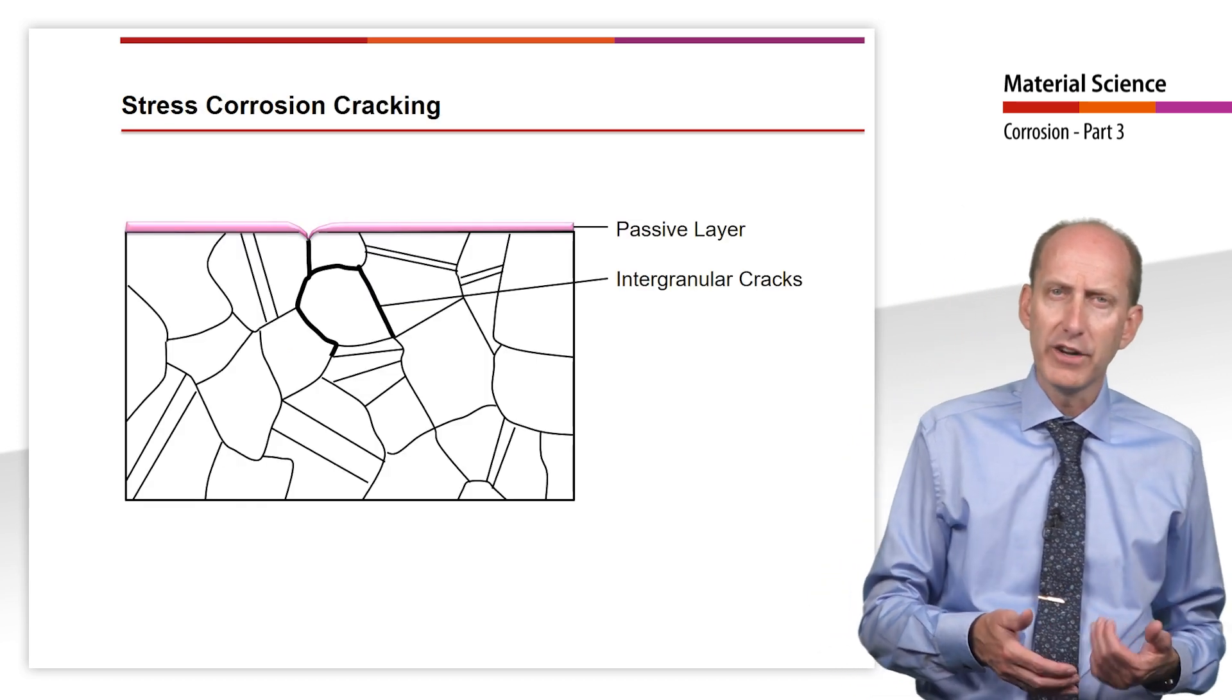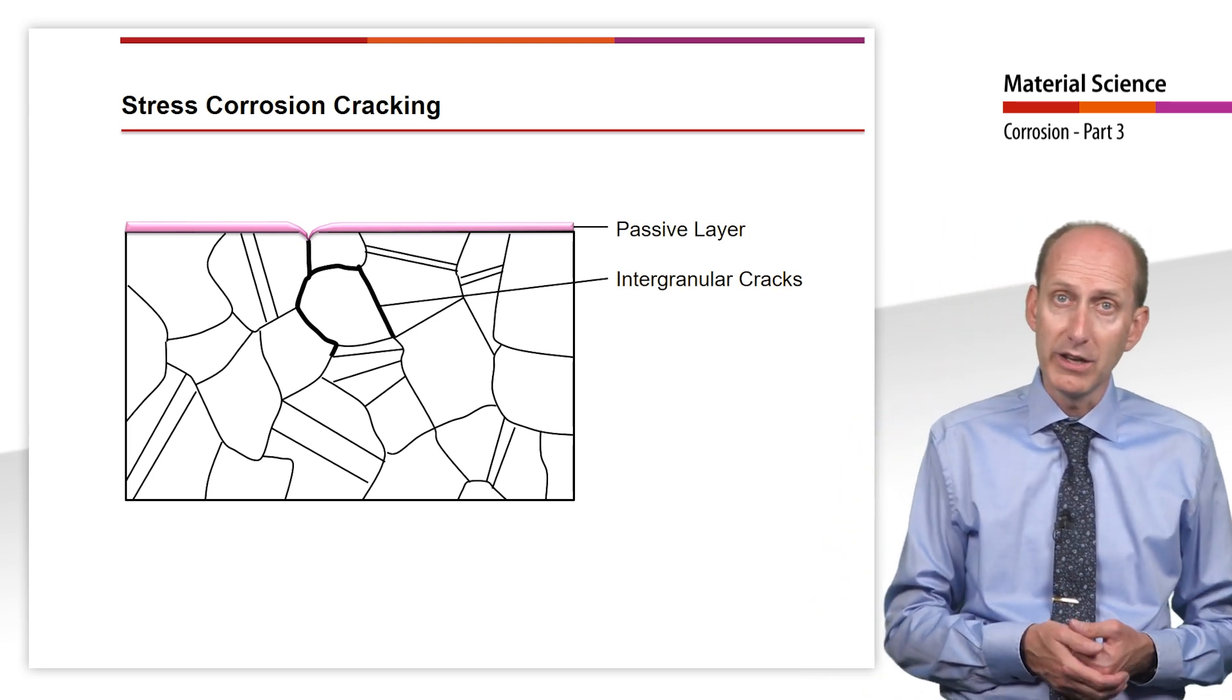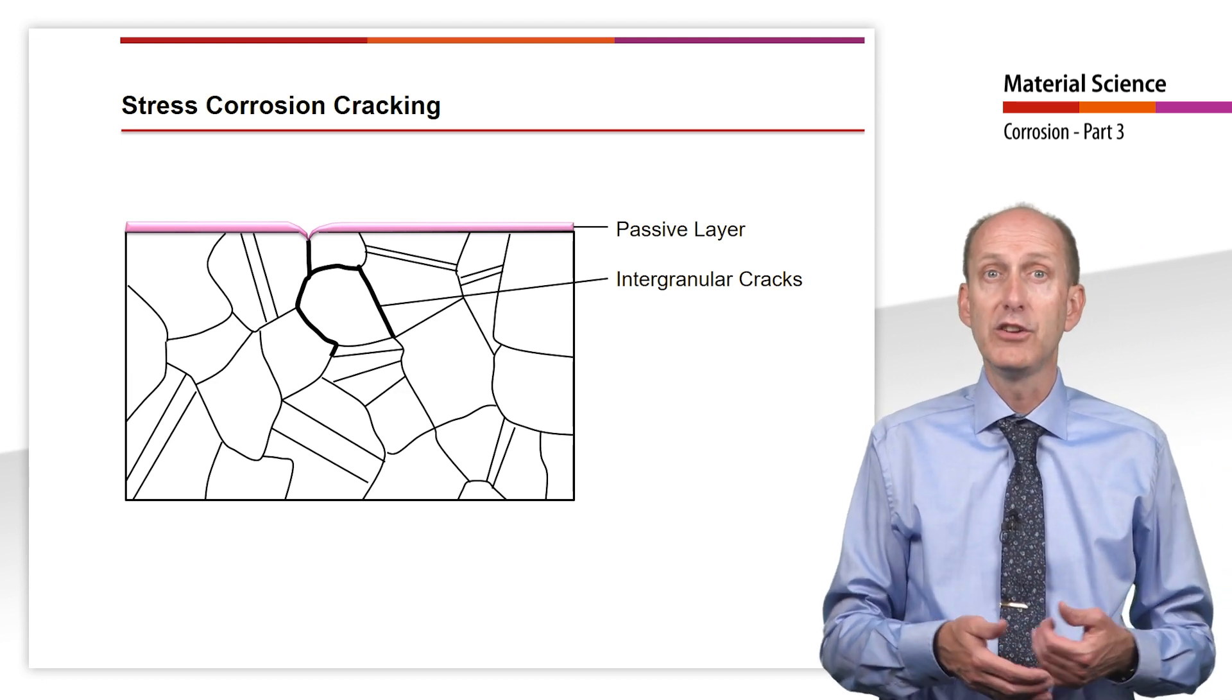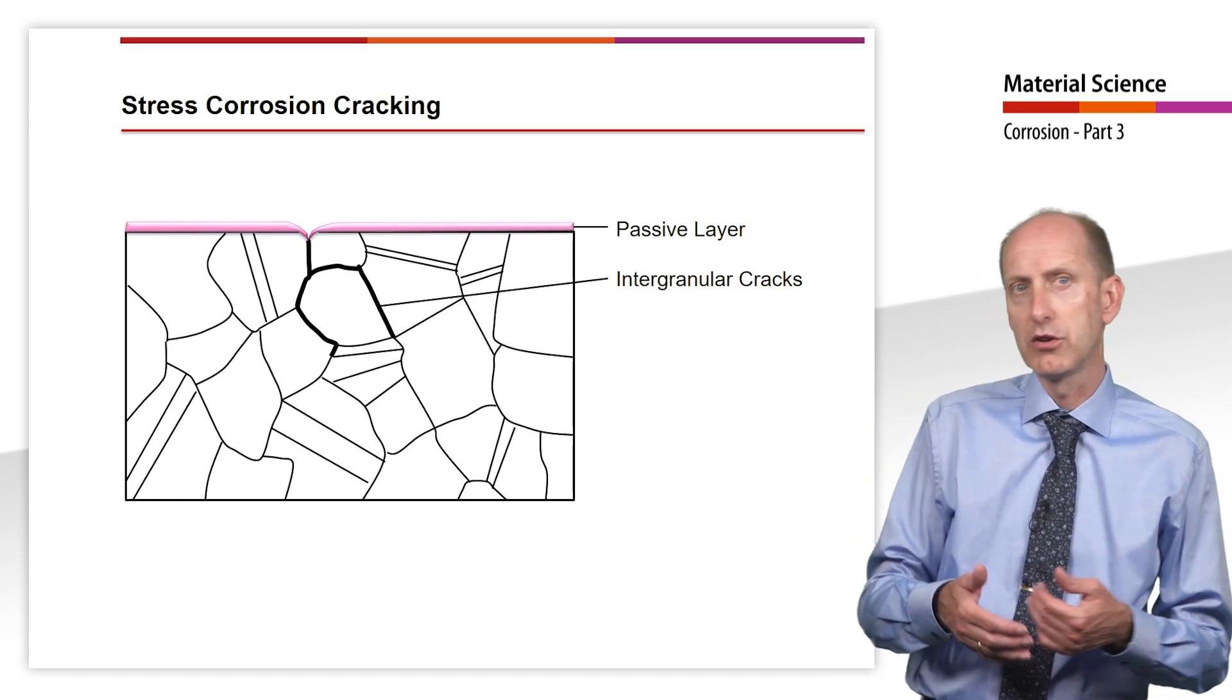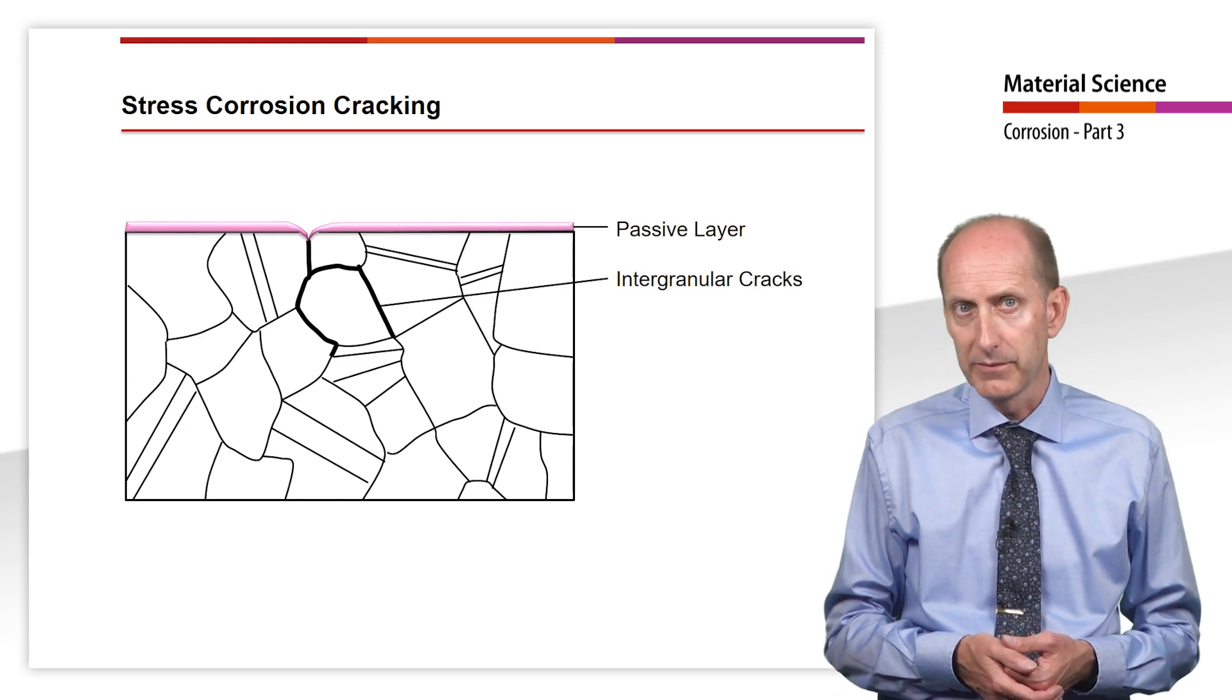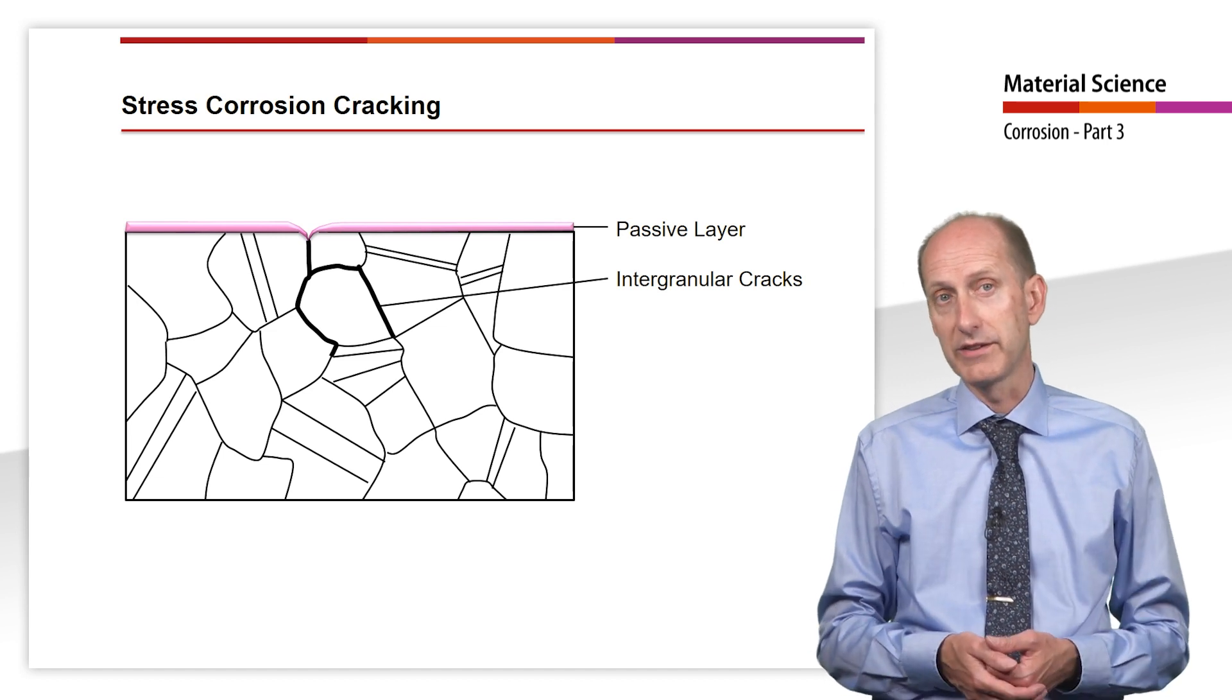If high stresses have occurred in the material during processing, which have not been relieved, for example, by suitable heat treatment, stress-induced intergranular corrosion can occur even at low chlorine concentrations of smaller than 20 mg per liter, even without major chromium depletion by carbides and or nitrides.